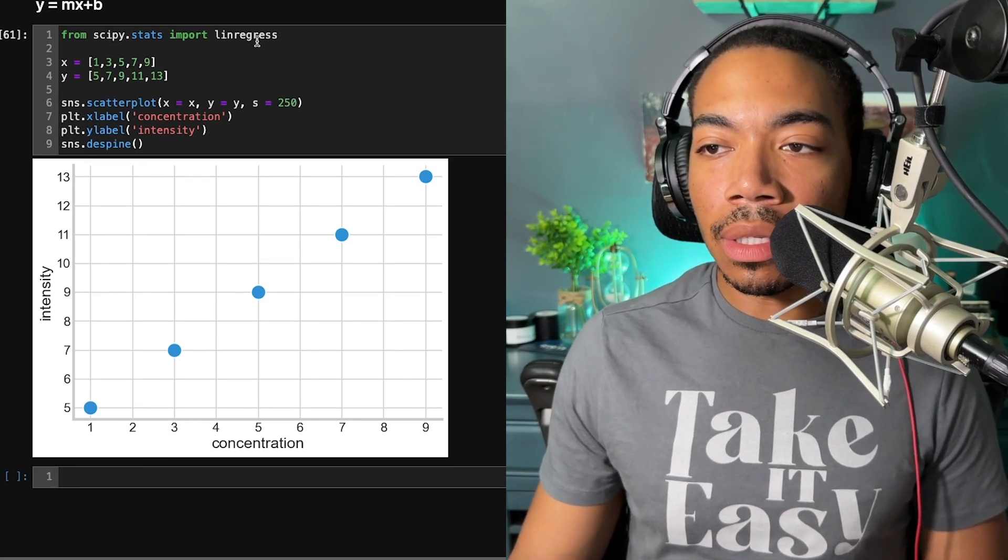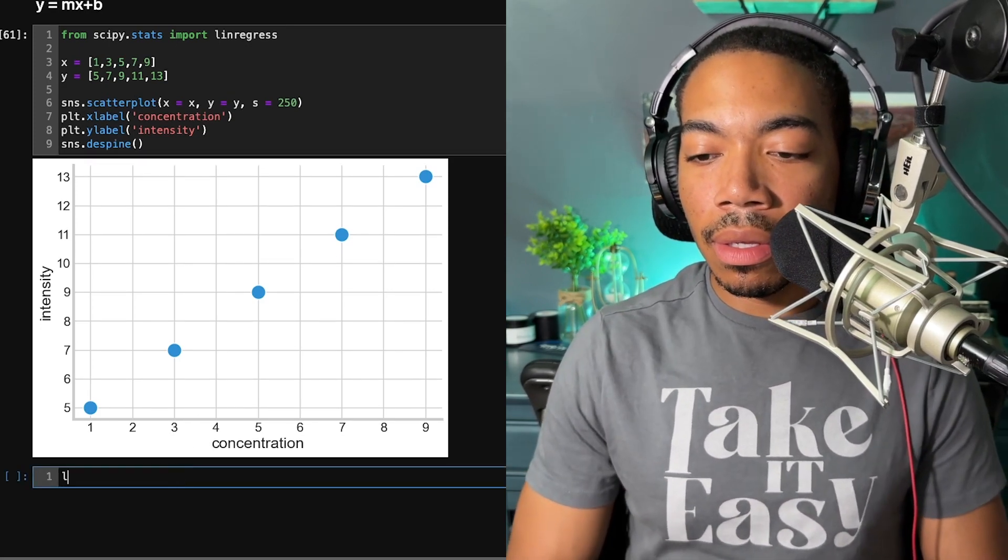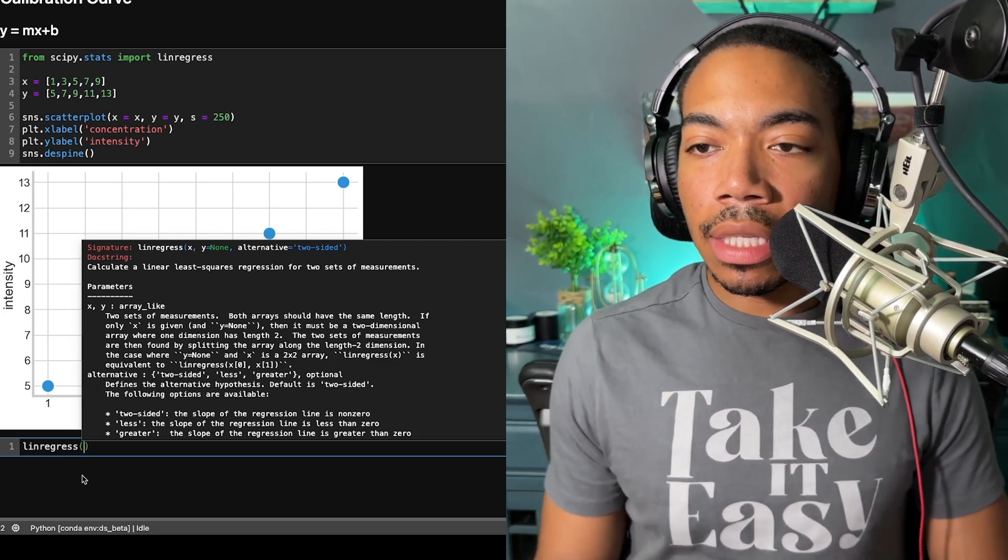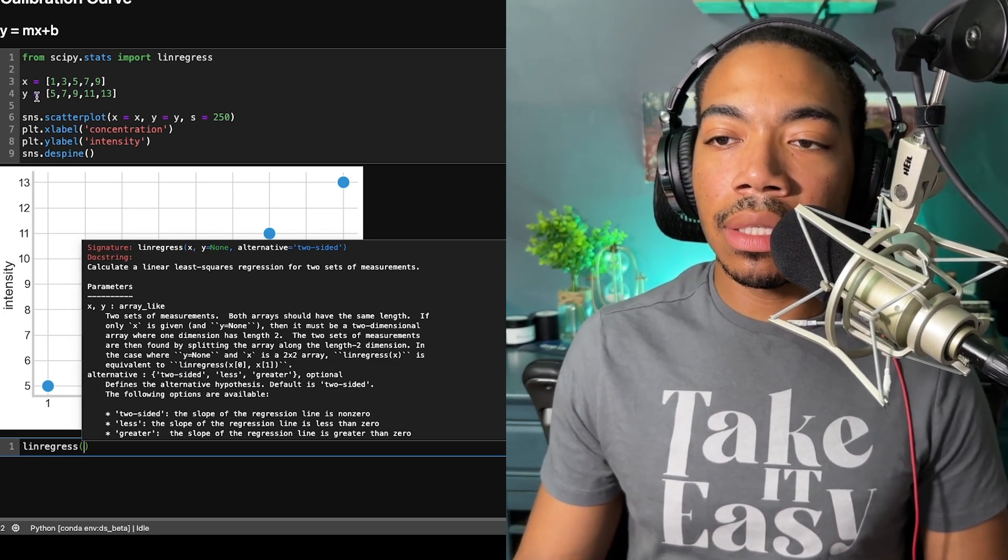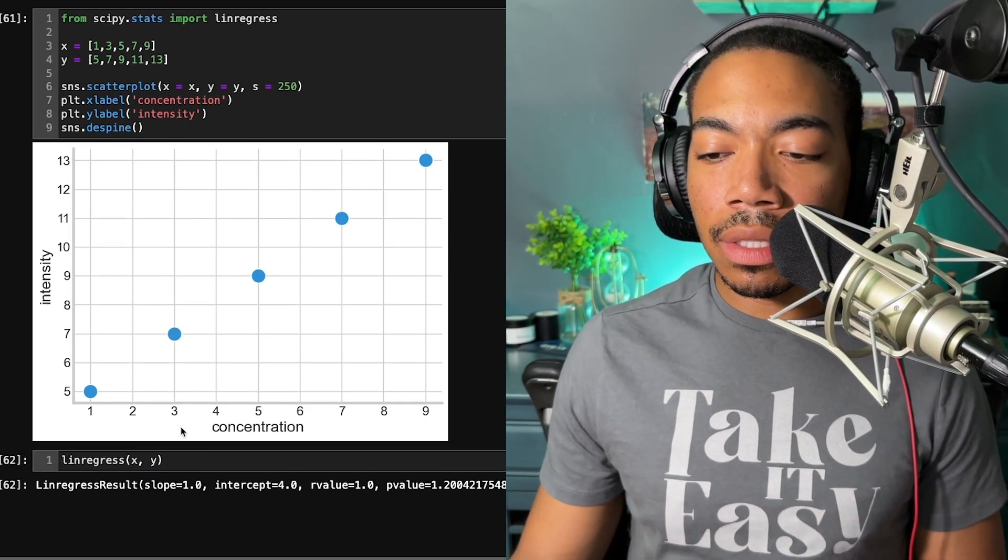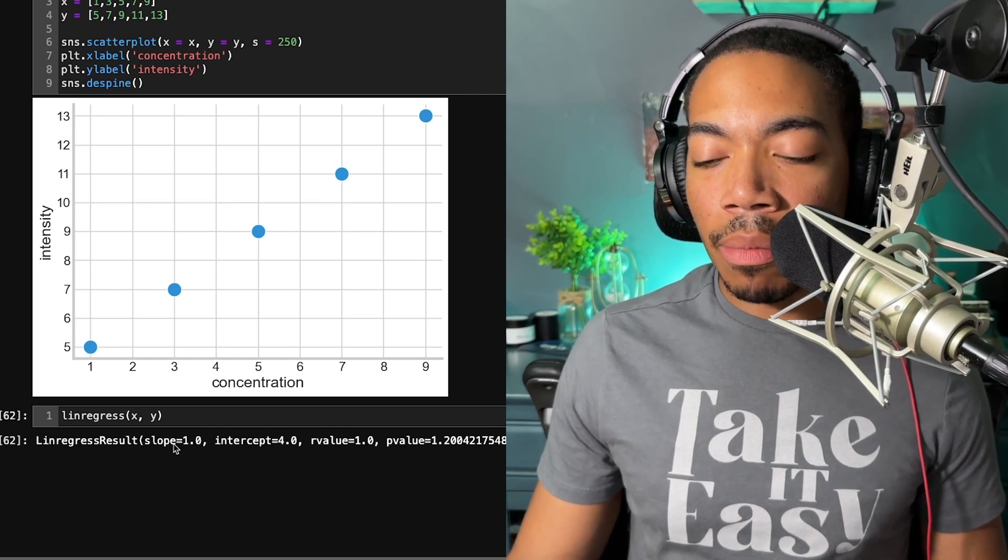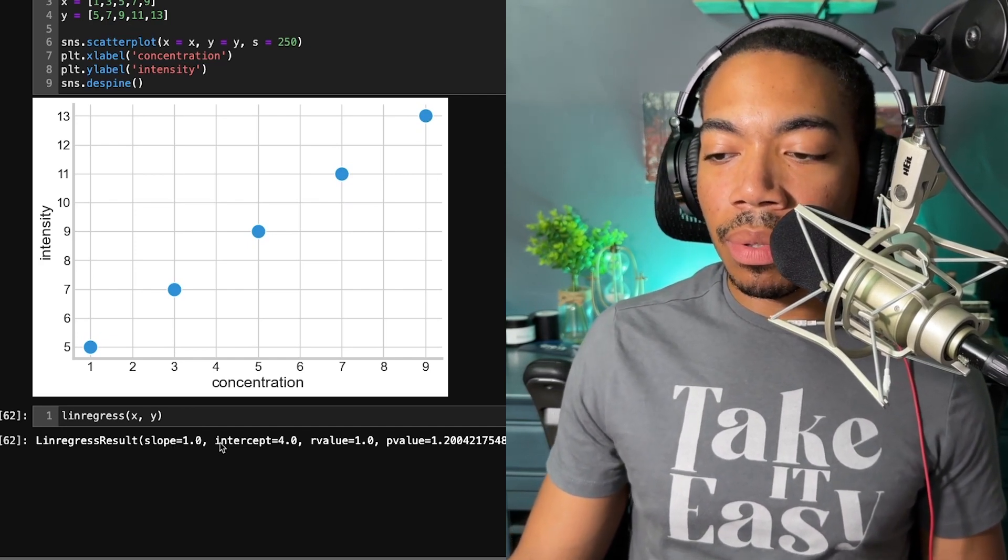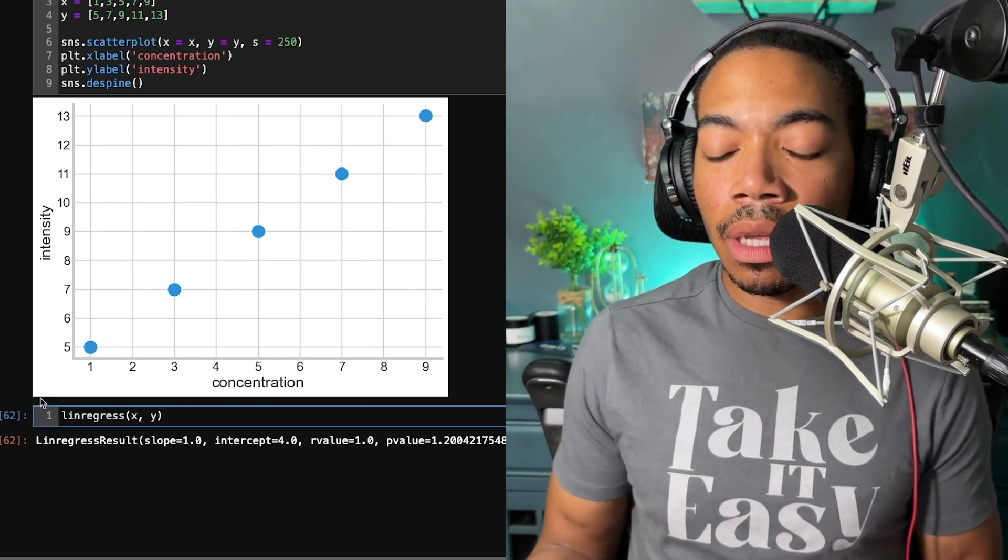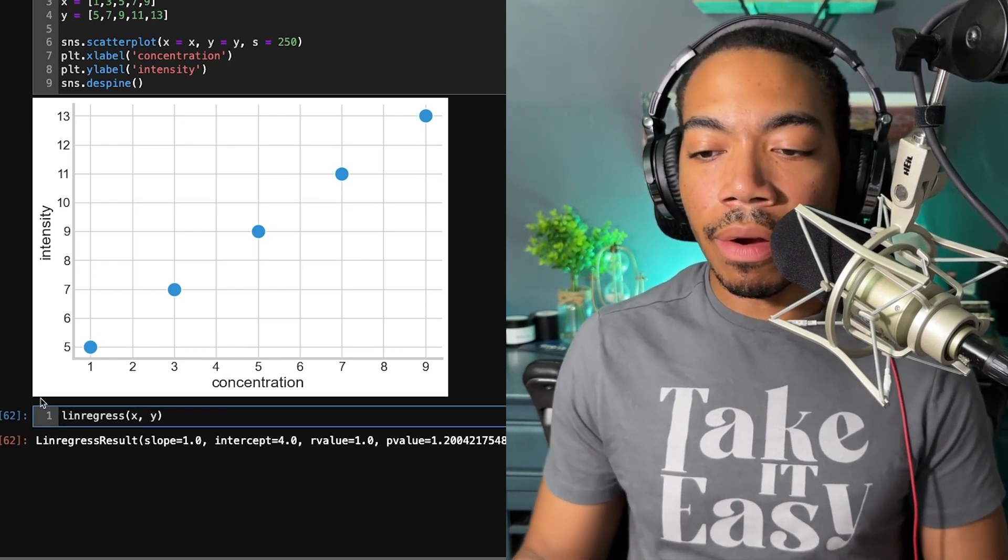So to begin, we're going to use this linregress method. And if you look inside, you see that it takes x and y. So in this case, our x would be our x list, our y would be our y list. And when we run this method, you see that we output multiple parameters, including the slope, the intercept, and several others. And so we can actually store these model outputs into their own variables.